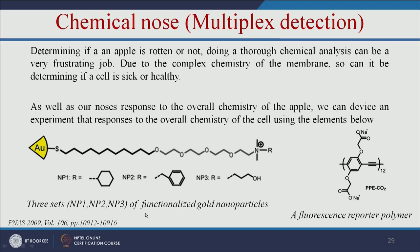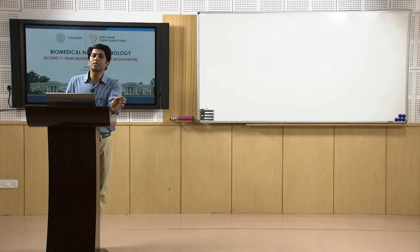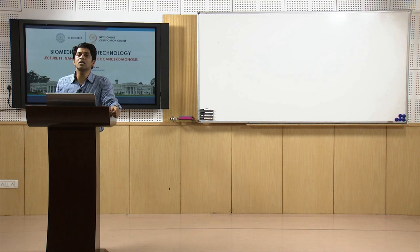The nanoparticles are covered with the polymer and the fluorescence is off. When the nanoparticle binds to the cancer cell, it removes the polymer, and once the polymer is removed, it gives the fluorescence signal. For example, yellow, red, and green fluorescence — if all fluorescence is on, the person is in the advanced stage of cancer. If only one particular polymer gives a fluorescence signal, the person is in the early stage of cancer due to expression of a particular marker. Accordingly, we can give the drug for cancer therapy.